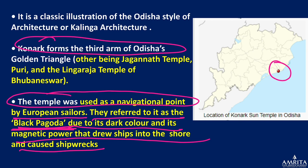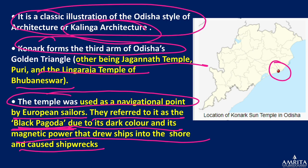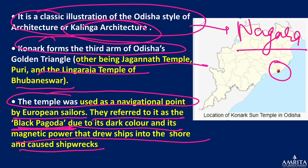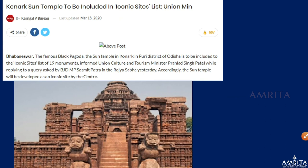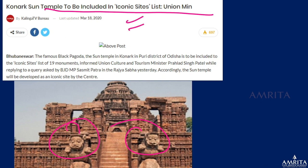Konark forms the third arm of Odisha's golden triangle, the other two being the Jagannath Temple and the Lingaraj Temple. It is an example of the Odisha/Kalinga school of architecture, which is a subtype of the Nagara architecture. The temple is to be included in an iconic sites list. Konark is a really famous and very spiritual place.